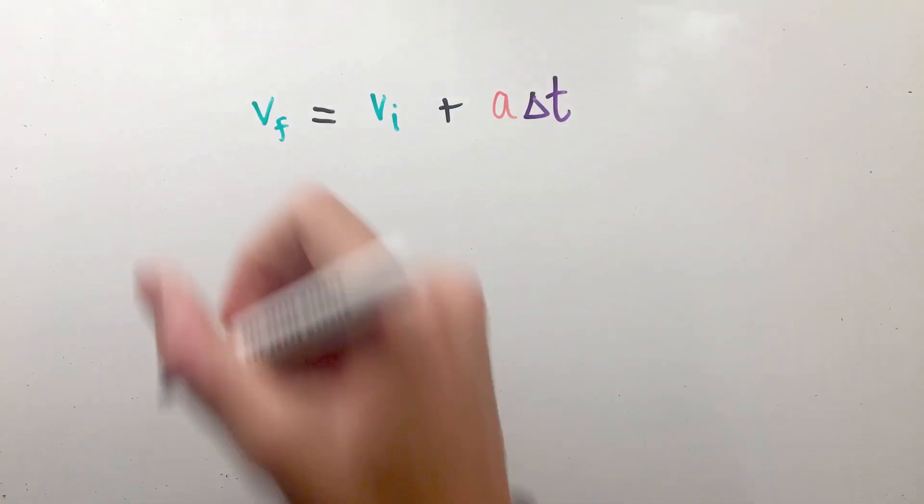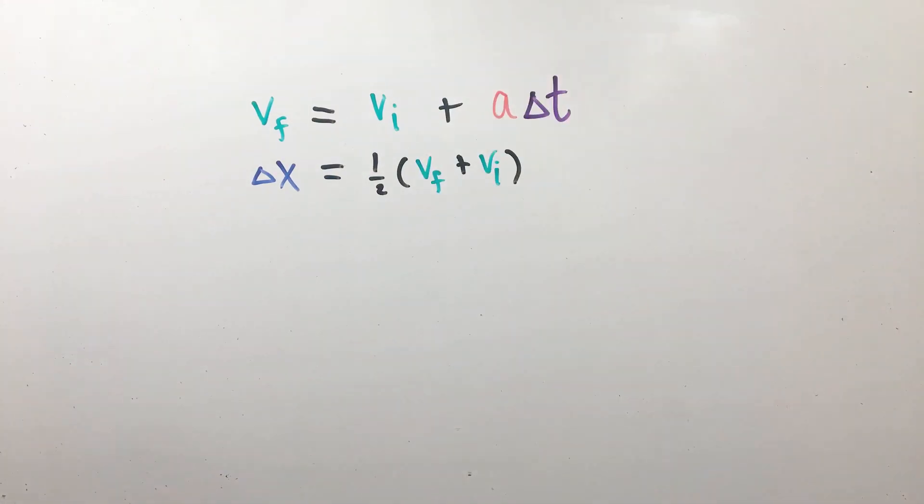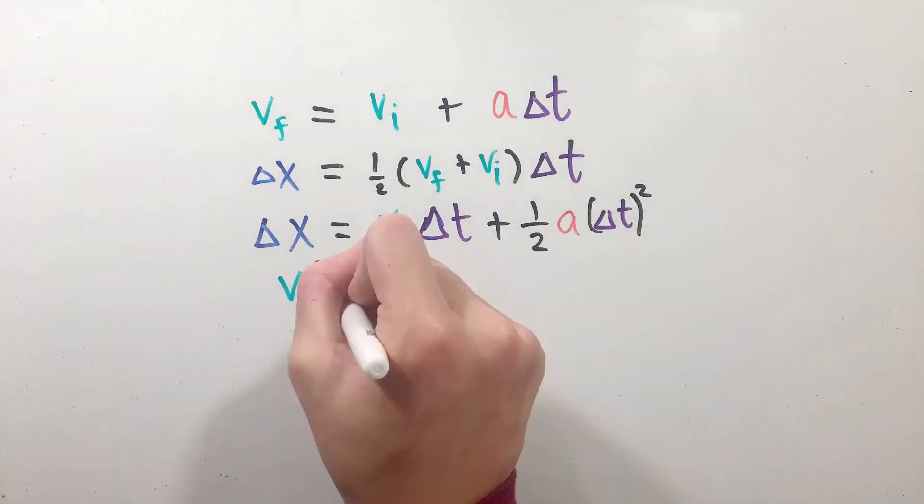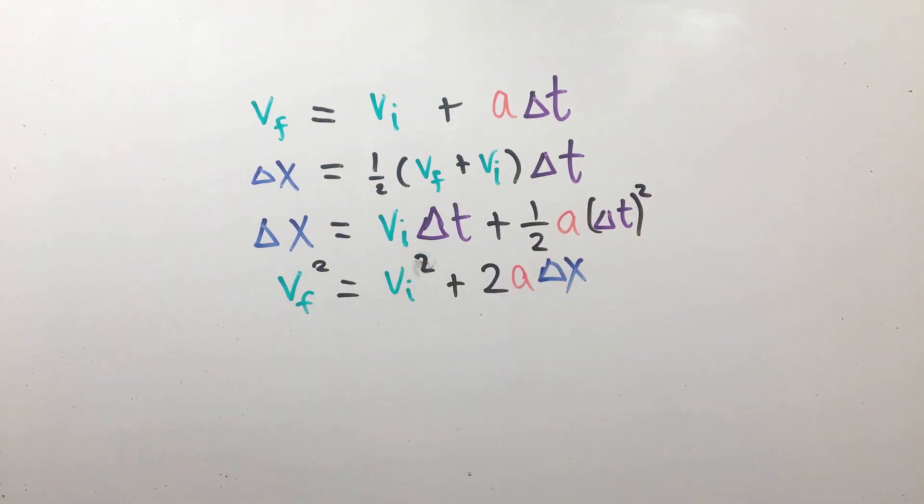For uniform acceleration, the equations to describe an object's motion are a bit more complicated, and there's actually four fundamental formulas, called the kinematic equations, that can be used to express the motion of just about any uniformly accelerating object, but those will be the topic for a future video.